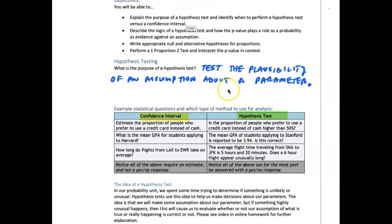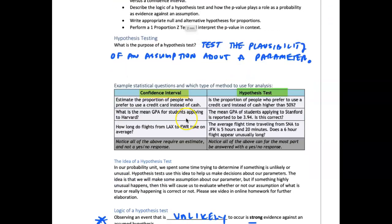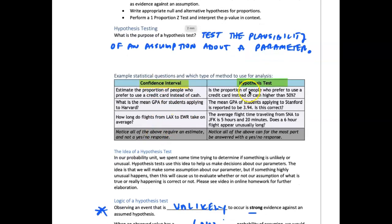Remember, a test is different than a confidence interval. A confidence interval is a way to estimate a value. A hypothesis test is a way to answer pretty much a yes or no question. That's kind of the most simplified way to think about it.